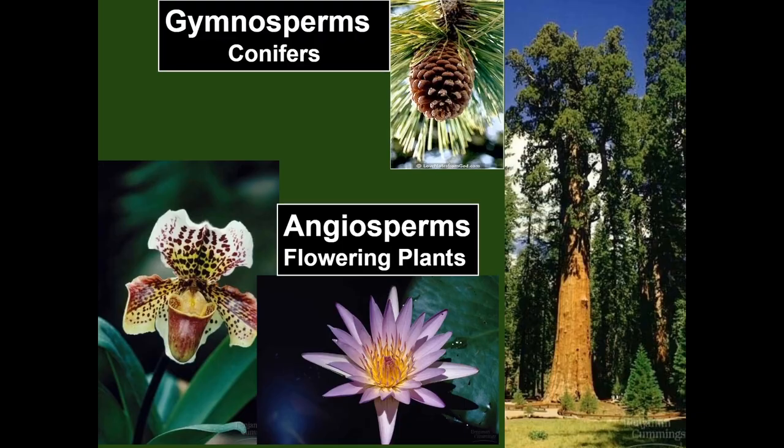This episode is going to cover three main topics. One, how a gymnosperm and an angiosperm have adapted to land. Two, the general parts of a flower of an angiosperm. And three, how pollen and seeds get dispersed. So let's get started.